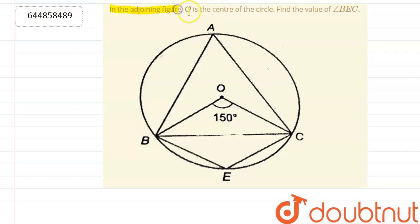In the given figure, O is the center of the circle. Find the value of angle BEC. We have to find this angle. Now, we know that the angle subtended by arc BC to the center is twice the angle subtended anywhere on the circumference of the circle.